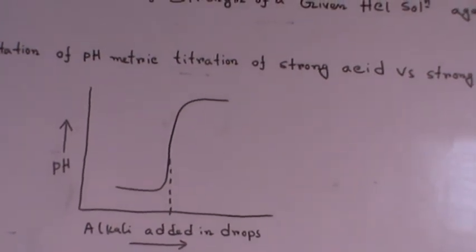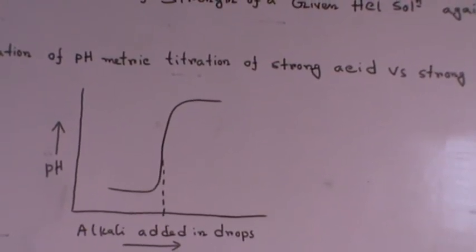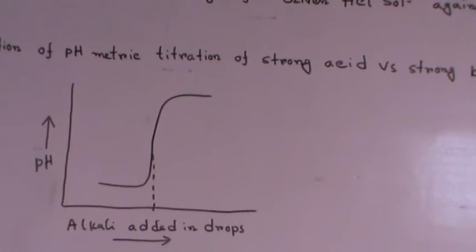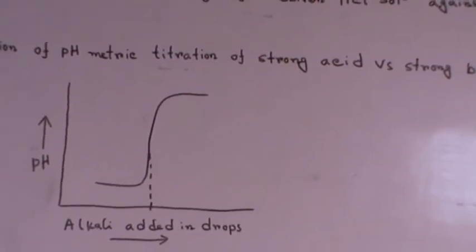From the steep curve we have to draw a line to the x-axis that will give us the number of drops of alkali that has been added to the solution, and from there we will calculate the strength of unknown HCL solution.